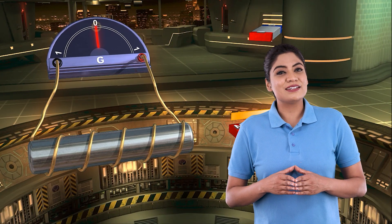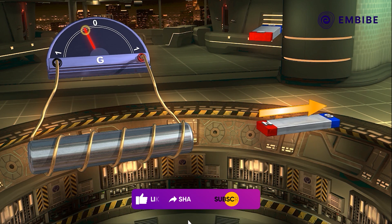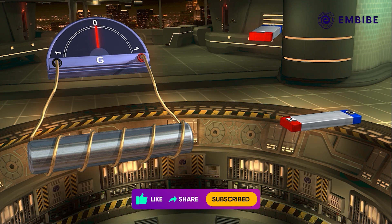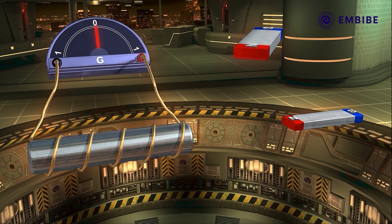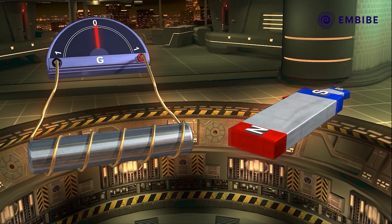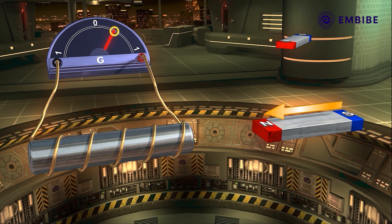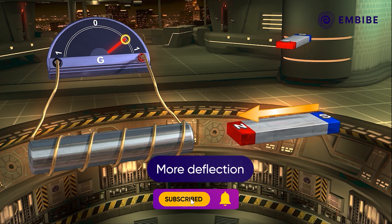Next, take the magnet away from the coil. Again, we see deflection in the galvanometer, but now in the opposite direction. Again, the magnet is made stationary and the galvanometer shows no deflection. In this experiment, just replace the first magnet with a stronger magnet. As we move this magnet towards the coil with the same speed, we find that the galvanometer shows more deflection.